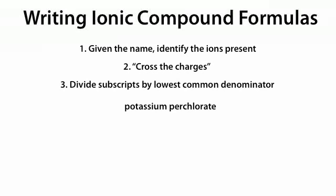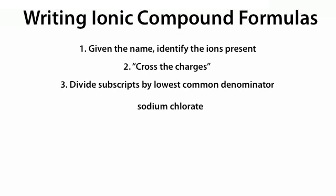Potassium perchlorate: K+ and ClO4-. Cross the charges, we get KClO4. Sodium chlorate: Na+ and ClO3-. Cross the charges and we get NaClO3. We don't need to divide any subscripts because the lowest common denominator is 1.